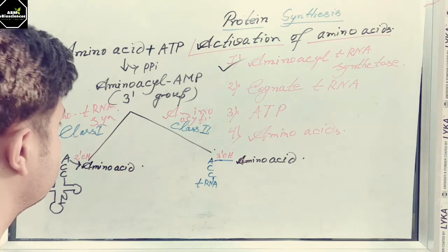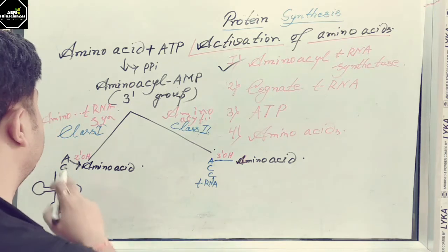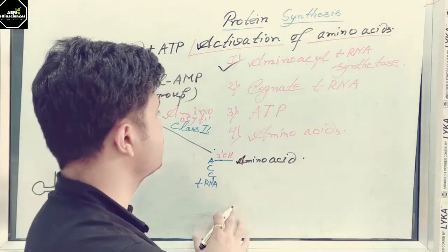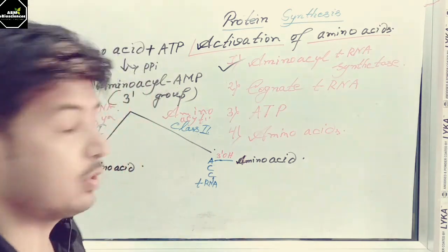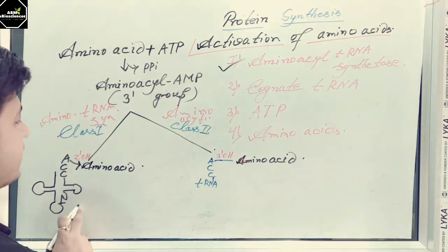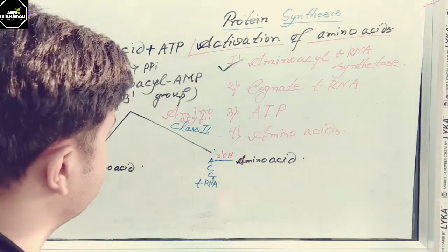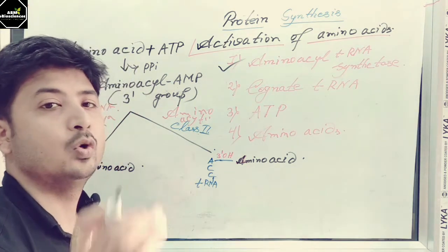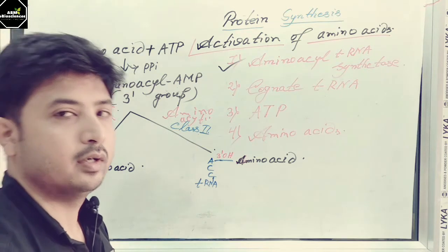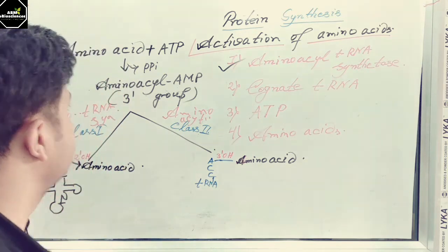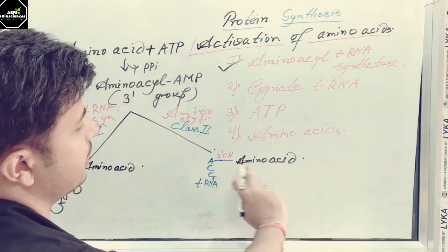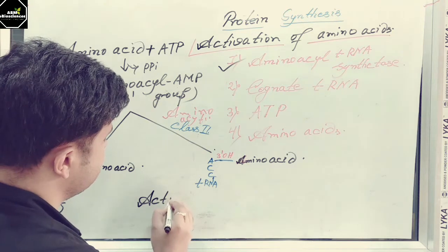To summarize: Class 1 aminoacyl-tRNA synthetase attaches the amino acid to the 2' hydroxyl group of the CCA adenylate residue on the tRNA. Class 2 aminoacyl-tRNA synthetase attaches the amino acid to the 3' hydroxyl group. Once the tRNA is attached to the particular amino acid, it proceeds to the protein synthesis or polypeptide synthesis process, and the activation is complete.